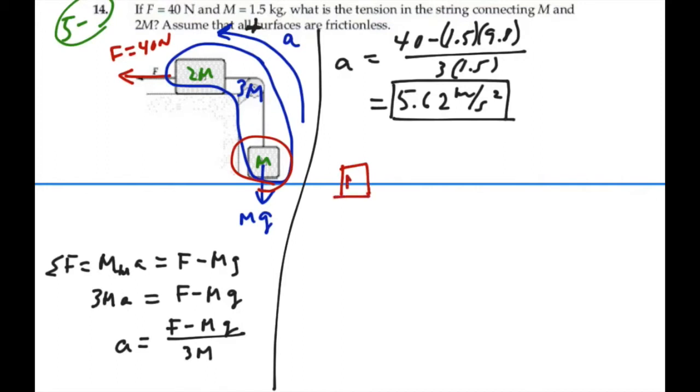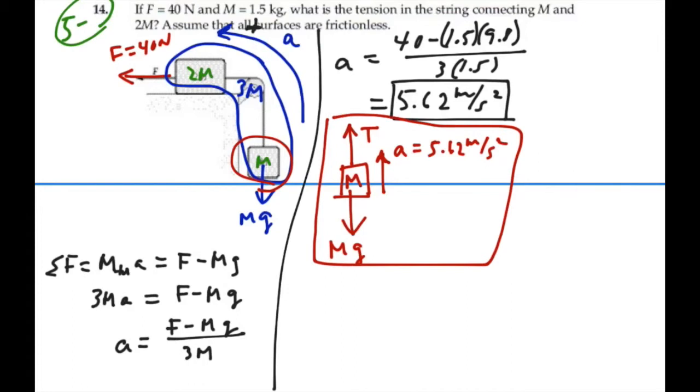If we did a free body diagram on mass M, it's got weight, Mg, and the other force acting on it is just the tension which is pulling up. As a result of these two forces, it manages to accelerate upward with a value of 5.62 meters per second squared. That is our free body diagram for mass 2.